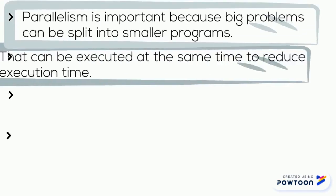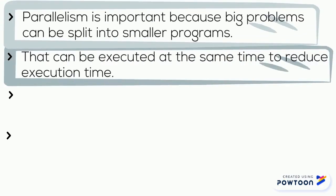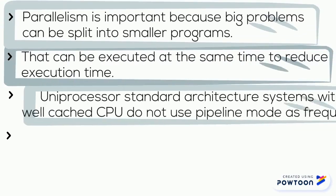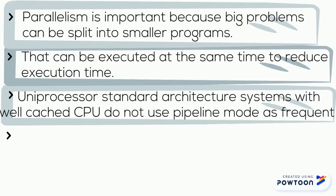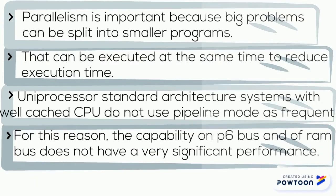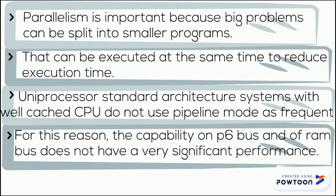For a uni-processing system, there is only a single processor, so if it is damaged, the whole system will break down. Parallelism is important because big problems can be split into smaller programs that can be executed at the same time to reduce execution time.